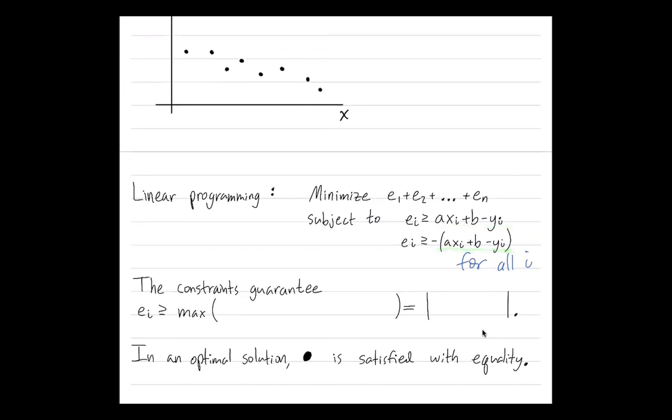Have I really modeled this equality correctly by two inequalities? So it's a little subtle, so let's go through it. So what do the constraints guarantee? Certainly, ei is bigger than this term, and it's also bigger than the negative of that term. So it's bigger than both of them. So ei is at least as big as axi plus b minus yi, and it's at least as big as negative axi plus b minus yi. So it's at least as big as the maximum of those two. What is the maximum of a number and its negative? The maximum of a number and its negative is just the absolute value.